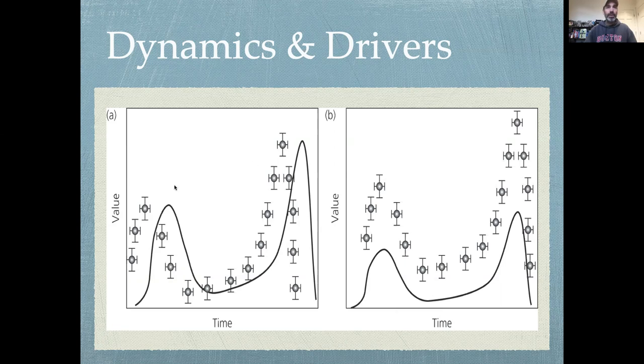By contrast, in panel A the model's actually getting the dynamics correctly, getting the amplitude correctly, but it's getting the timing off. The model is off by about one or two units in time, so it's shifted.